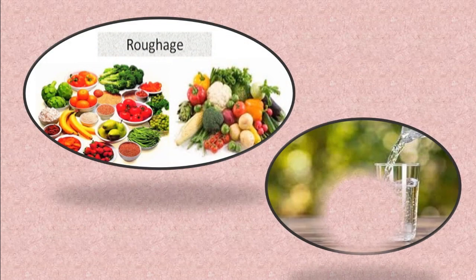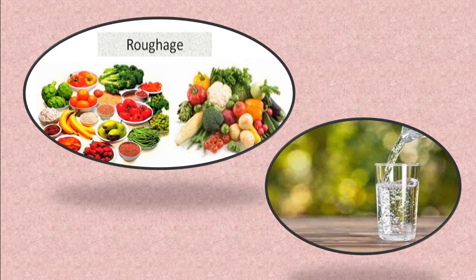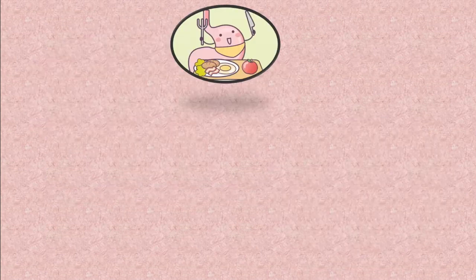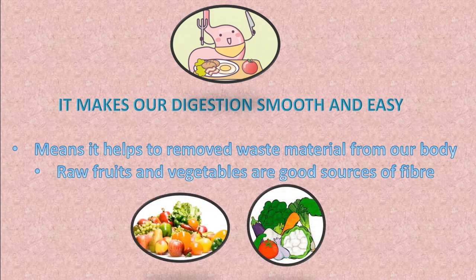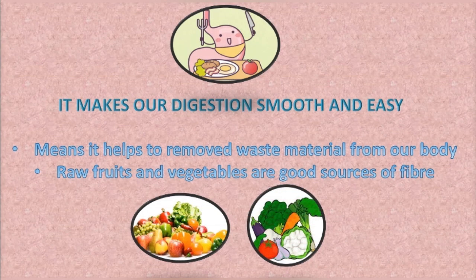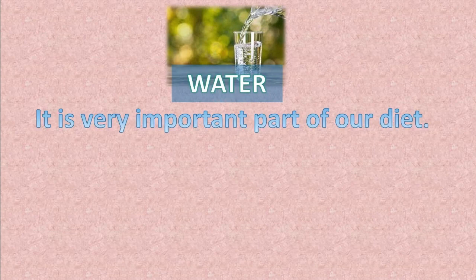Besides all these nutrients, we also take roughage and water in our diet. Roughage is the fiber present in our food; it makes our digestion smooth and easy, and helps to remove waste material from our body. Raw foods and vegetables are good sources of fiber.